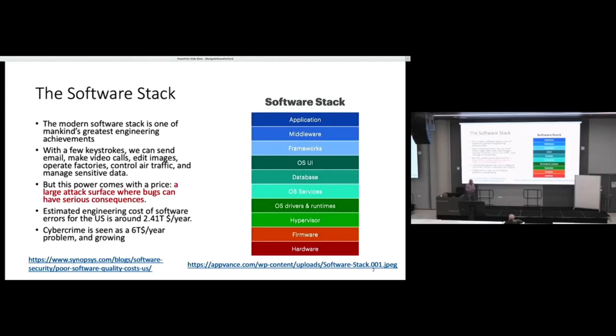People may not realize what the cost of this is. Software bugs alone, partly because the engineering of software is done so badly, is around $2.41 trillion a year. That's trillion with a T. I'm sure it's a severe underestimate. Cyber crime is a $6 trillion a year problem. Partly why it's an under approximation is that we don't measure the annoyance that bad software imposes on us.